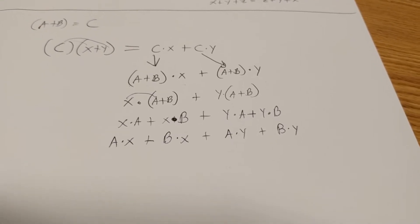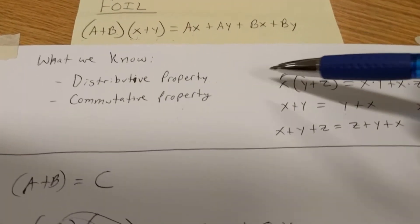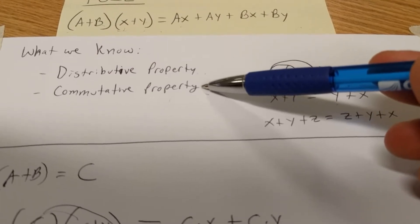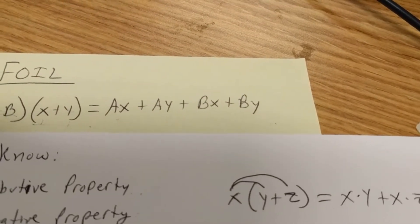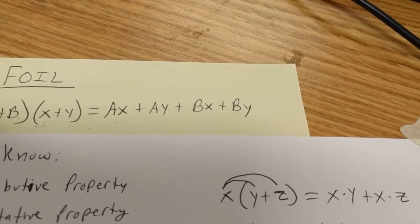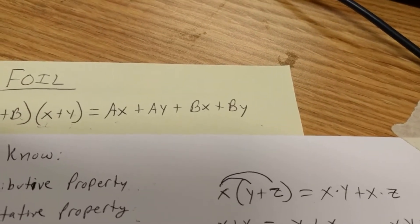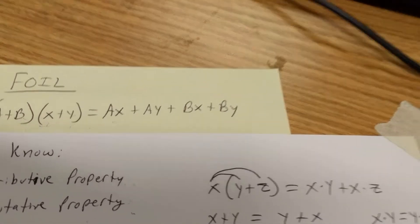Once again using our commutative property, we'll make this a times x plus b times x plus a times y plus b times y. All we did is for each multiplication operation, we switched the first and second term. Now we're in the last piece.